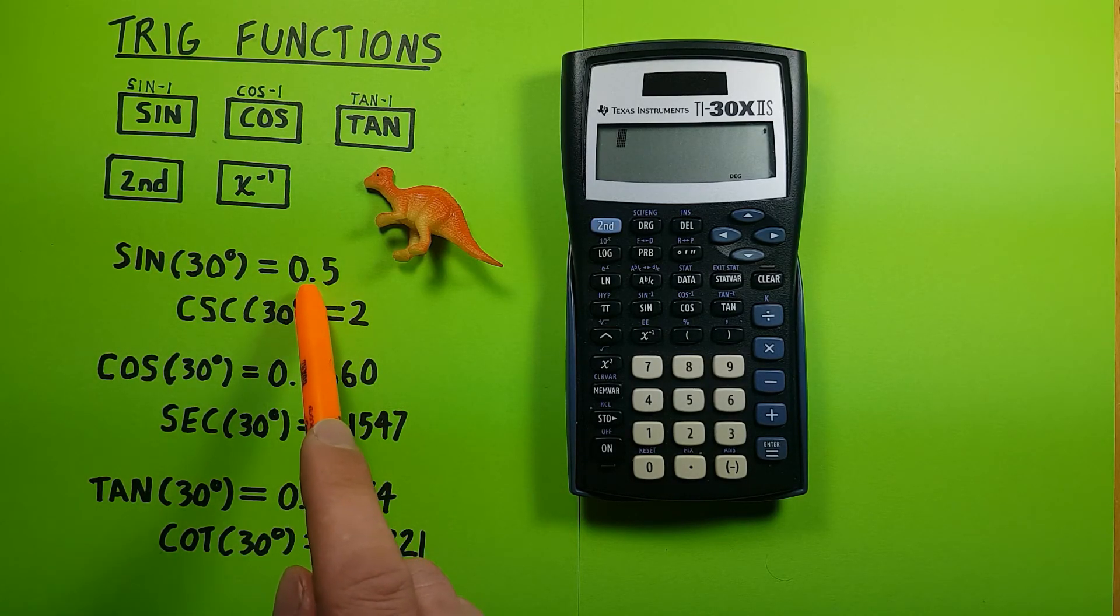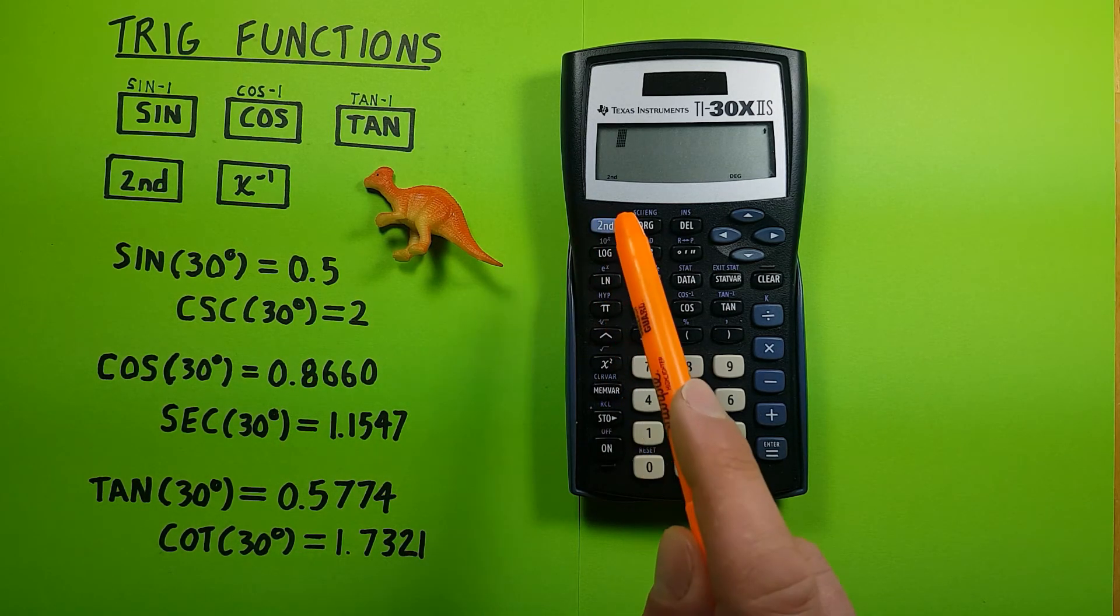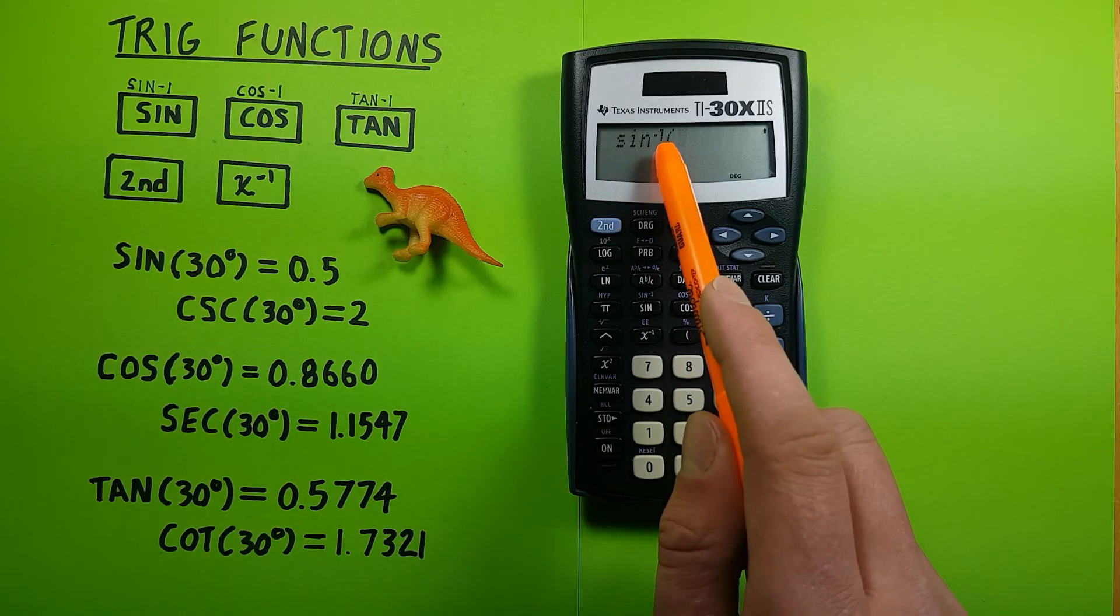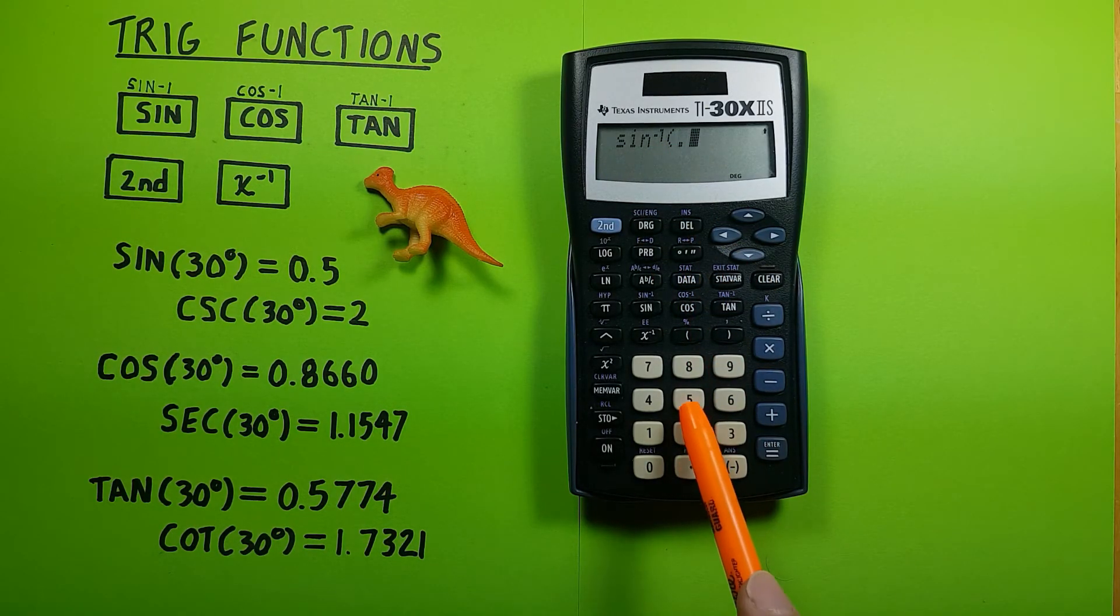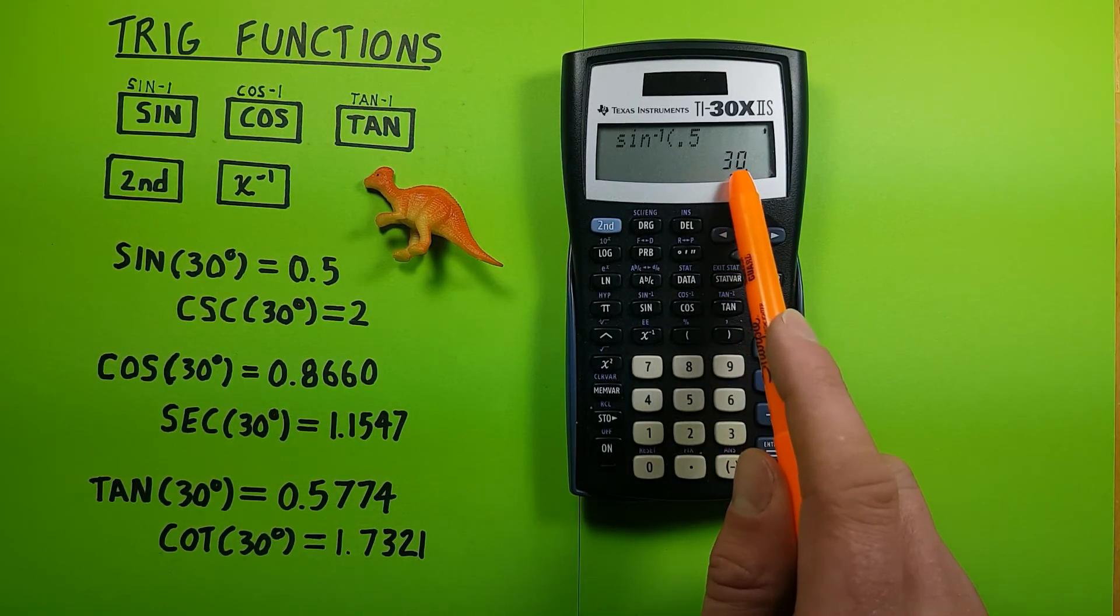If we had 0.5 and wanted to arc sine it, we would press second function sine so that we get sine to the negative 1, enter our 0.5, press equals, and see this brings us back to 30 degrees.